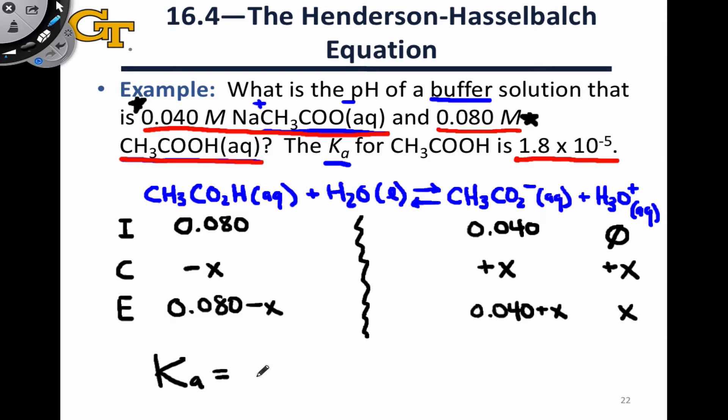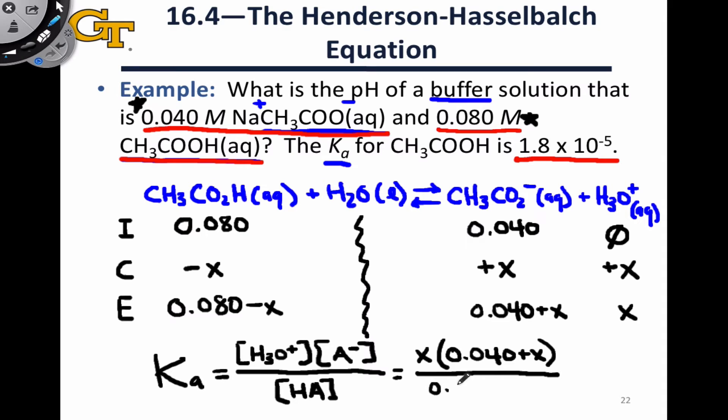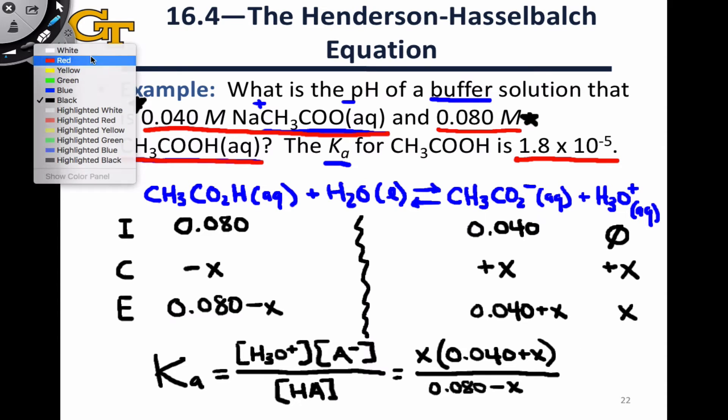Ka here is going to be equal to the concentration of H3O+, at equilibrium, times the concentration of acetate at equilibrium, I'm just going to abbreviate that as A- here to save a little space, divided by the concentration of the acid HA at equilibrium. We can plug in these values that we have. We have X for hydronium, we have 0.040 plus X for acetate concentration at equilibrium, and we have 0.080 minus X for the acetic acid concentration at equilibrium.